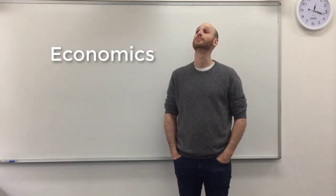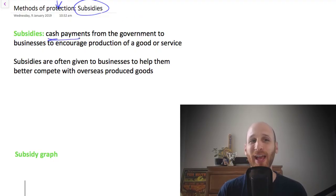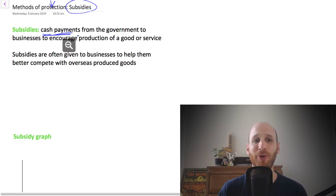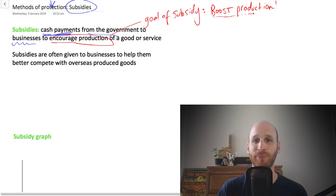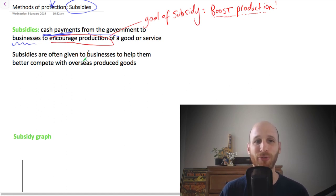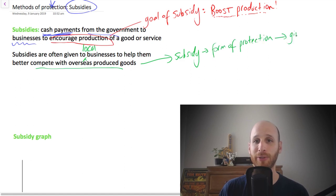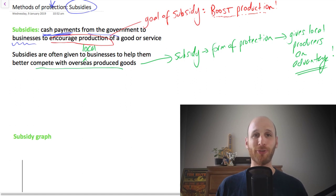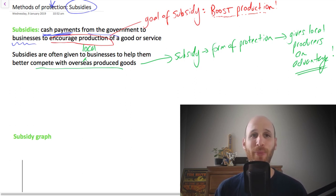In this video we're going to talk about subsidies. A subsidy is a cash payment — an amount of money that goes from the government to a business. The goal of a subsidy is to encourage production. In the context of free trade and protection, subsidies are often given to local businesses to help them better compete with overseas produced goods, giving local producers an advantage.